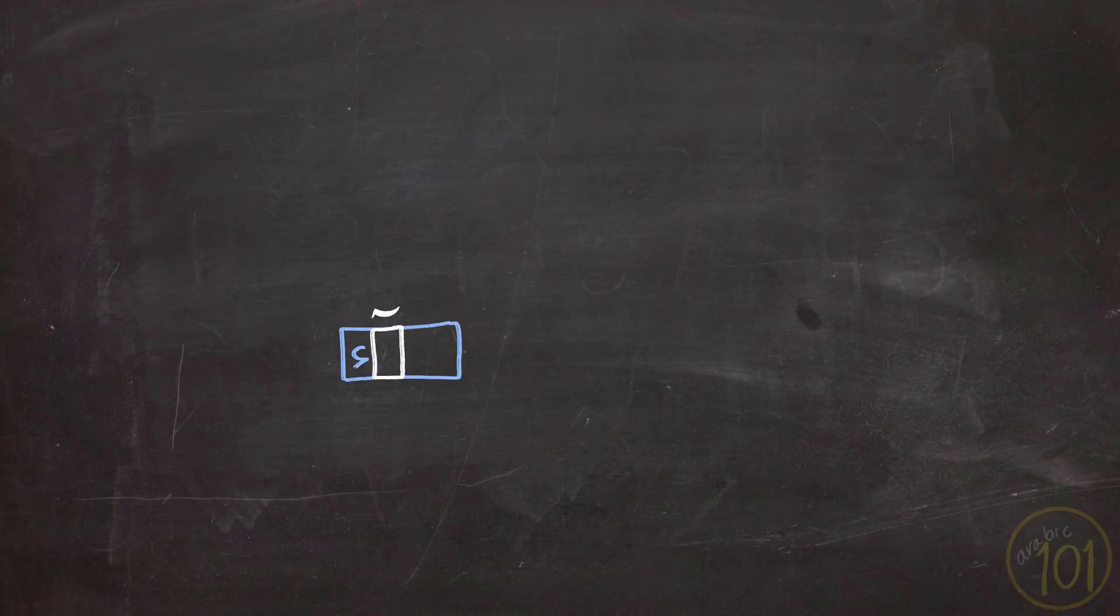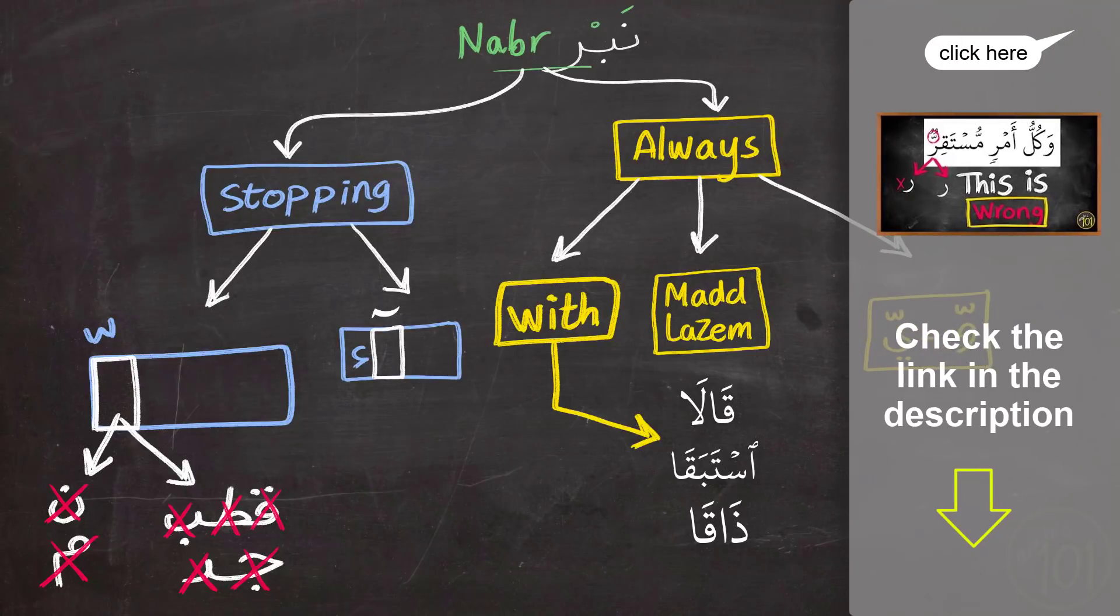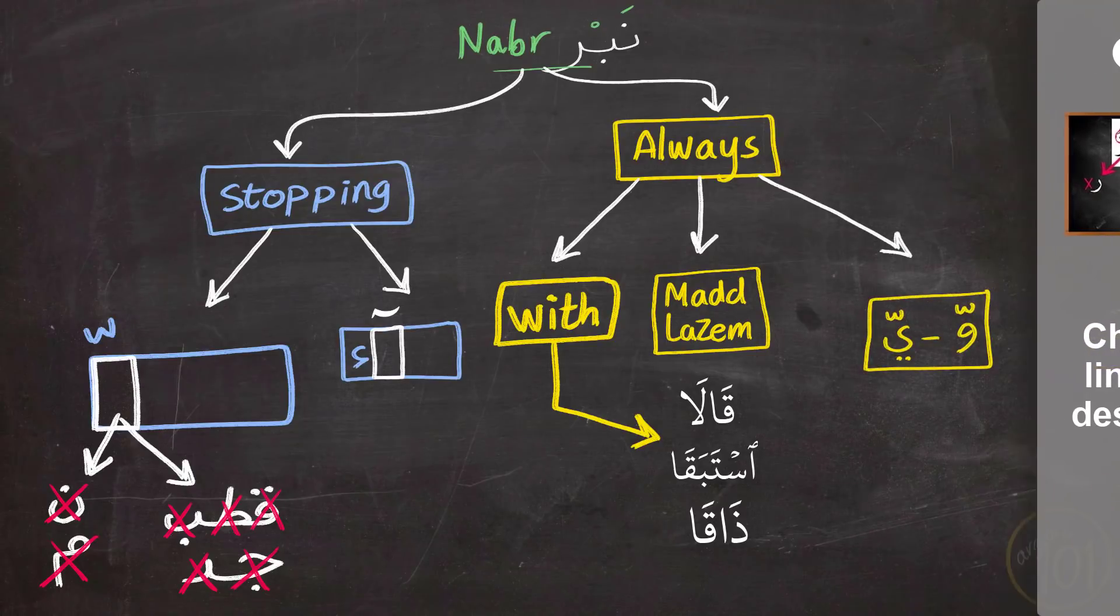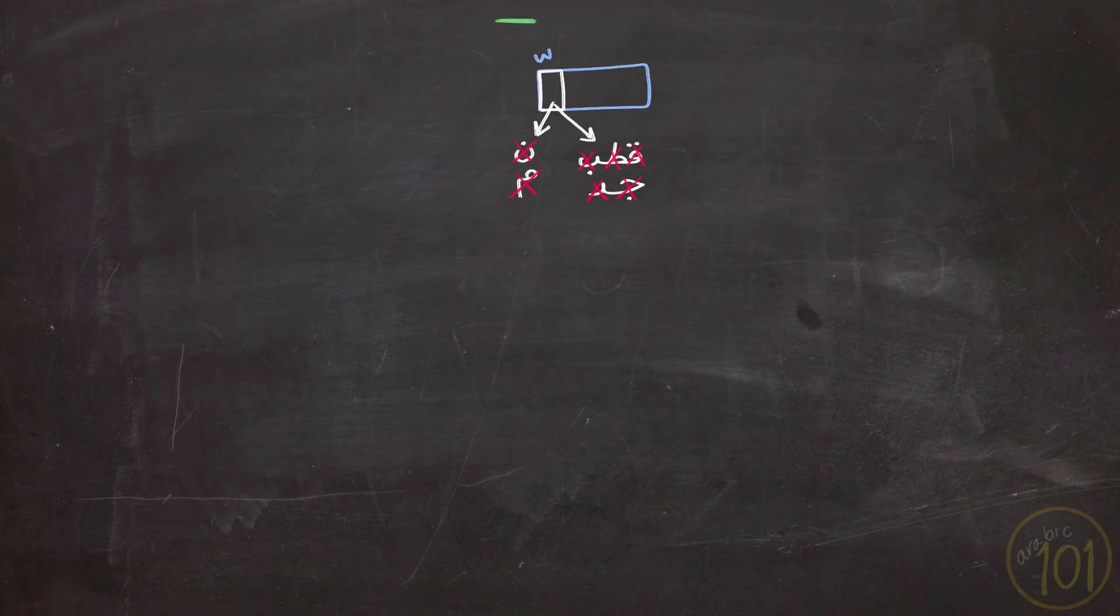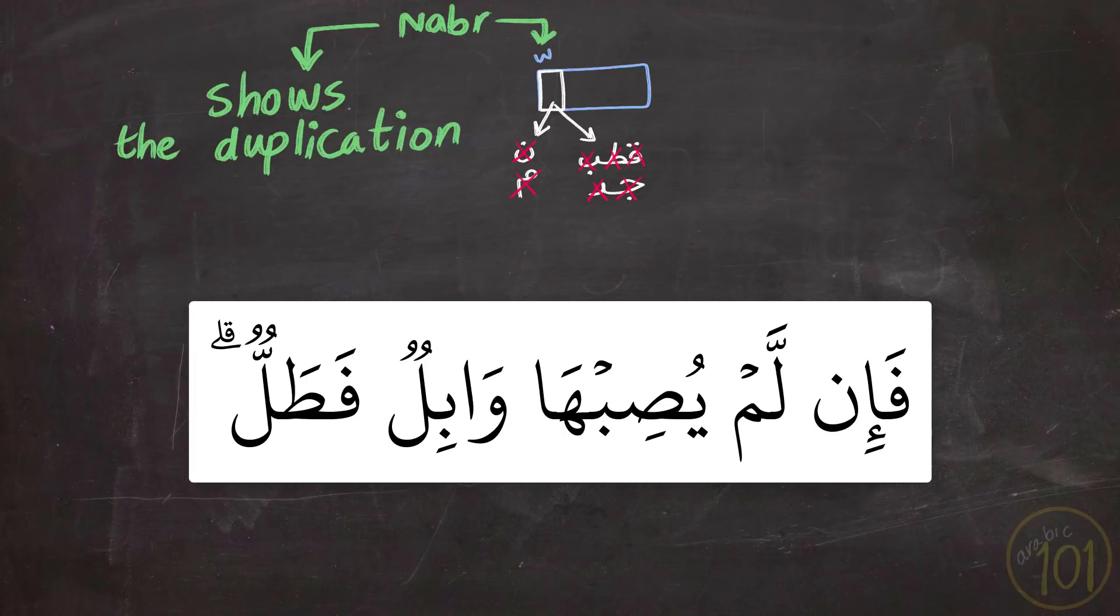Moving on to the second case which happens when you stop at a word that ends with a شَدَّ. This applies only if the letter with شَدَّ at the end of the word is not نُون, مِيم or any of the قُطْب جَد letters since these have their own cases, their own rules. And I talked extensively about these two cases in this lesson. So check it out if you haven't done that already. So if a word ended with a شَدَّ you will apply a stress or نَبْر at the end of the word to show that this letter has شَدَّ.